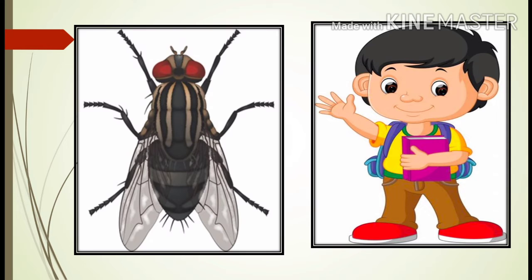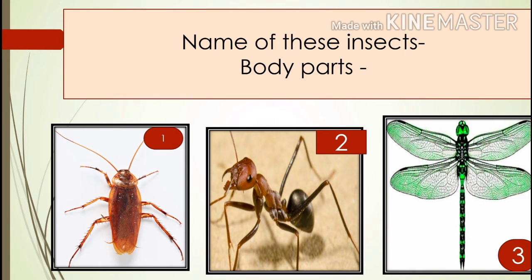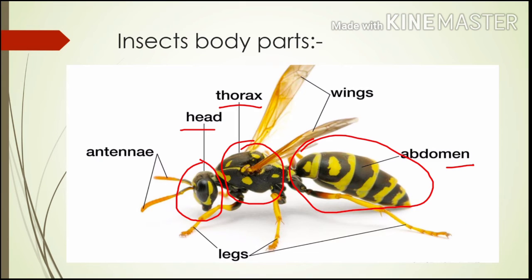These are some differences between their two body parts. Let's identify the different parts of the body of an insect by the picture. We will observe these pictures and name these insects and their body parts. The names of these insects are cockroach, ant, and dragonfly. The visible body parts of these insects are legs, head, eyes, antennae, and wings. Let's discuss the main body parts of an insect.